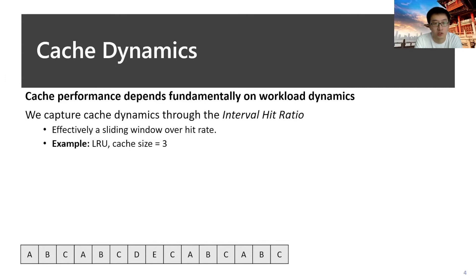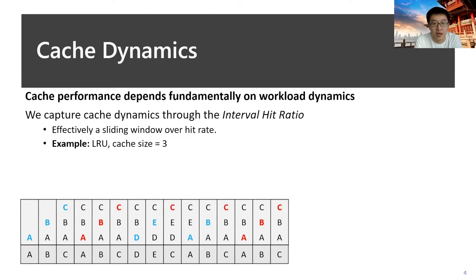We show an example to see how the interval hit ratio works. With the given trace, we assume we have a cache implemented as an LRU cache with a cache size of three. Each row in the table we consider as a cache slot, and this shows all the cache behaviors. You see the blue letters as cache misses, which could be initially loaded or replacing existing objects. The red letters are cache hits.